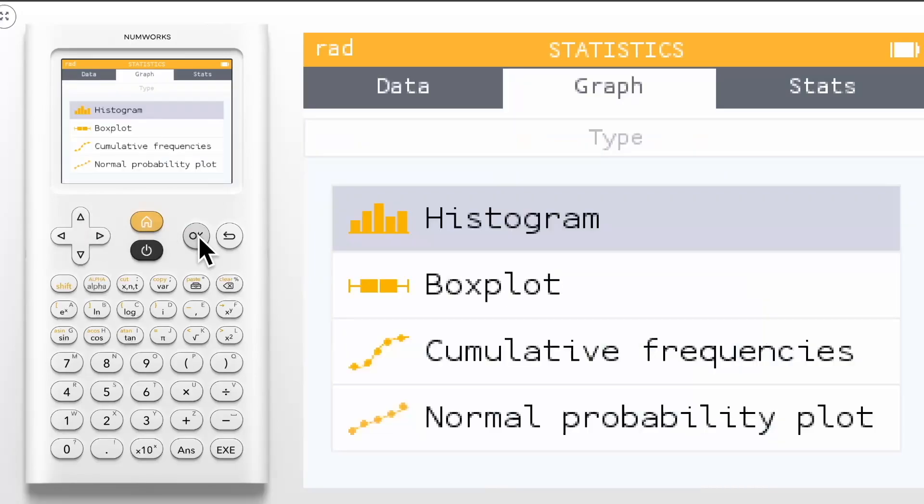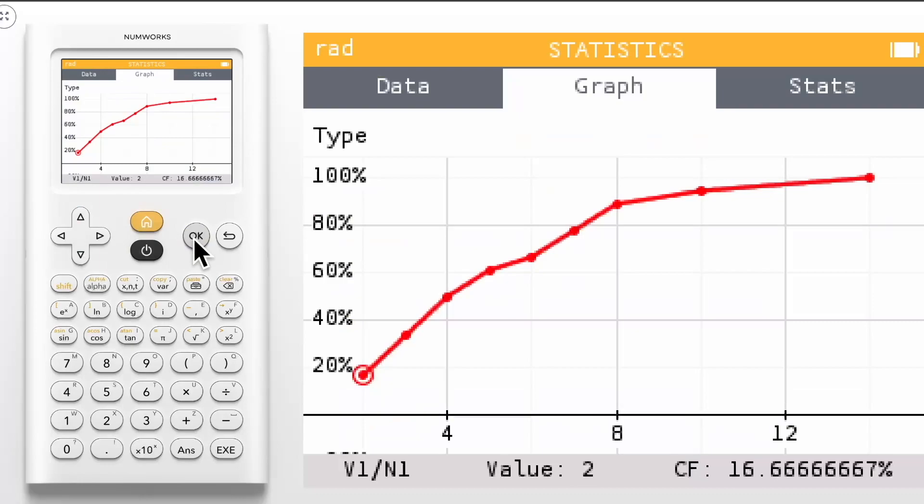Navigate to the graph tab and select cumulative frequencies. You can navigate through the values and view the cumulative frequency. You can also input a value you want to get the cumulative frequency of.